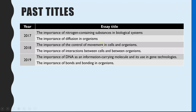The other thing to notice is quite a lot of the titles have two elements to them. For example, the 2018 title: the control of movement in cells and in organisms; 2019: DNA as an information-carrying molecule and in gene technologies. So whichever title you go for, analyse it before you start to make sure your plan and therefore your essay fully addresses the whole title.